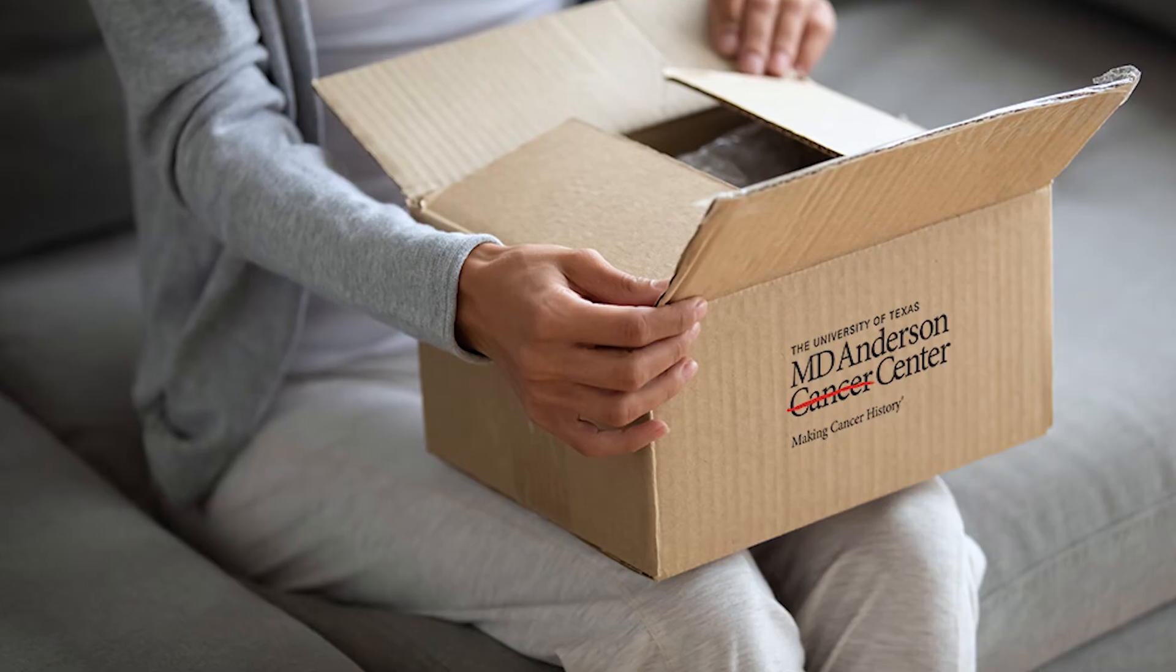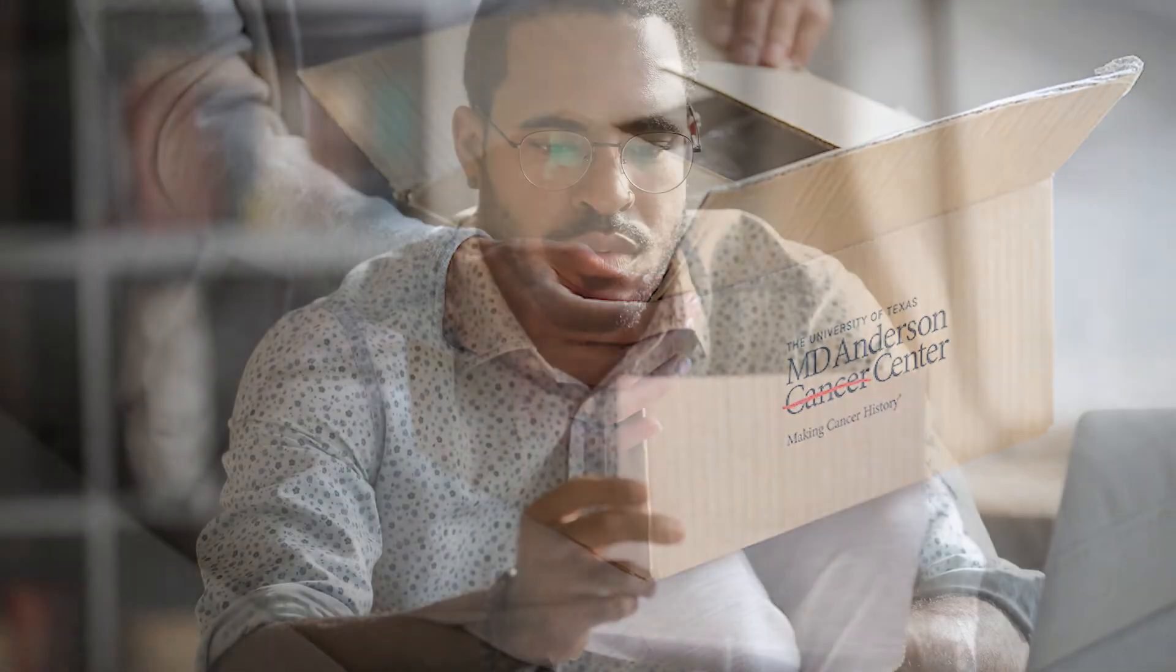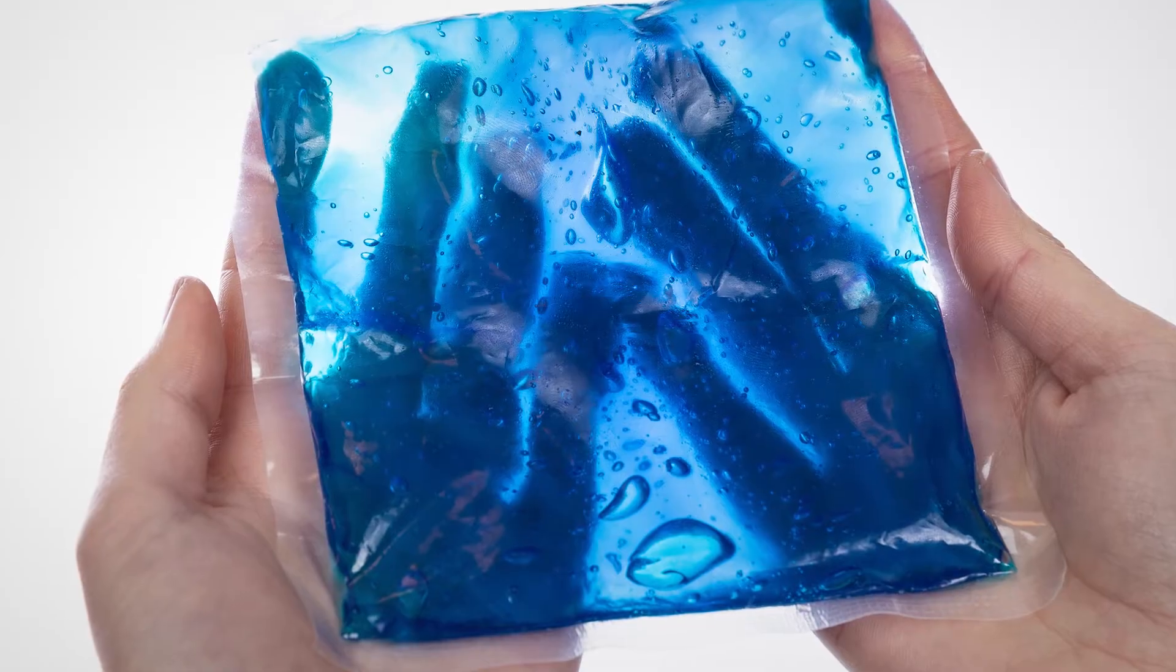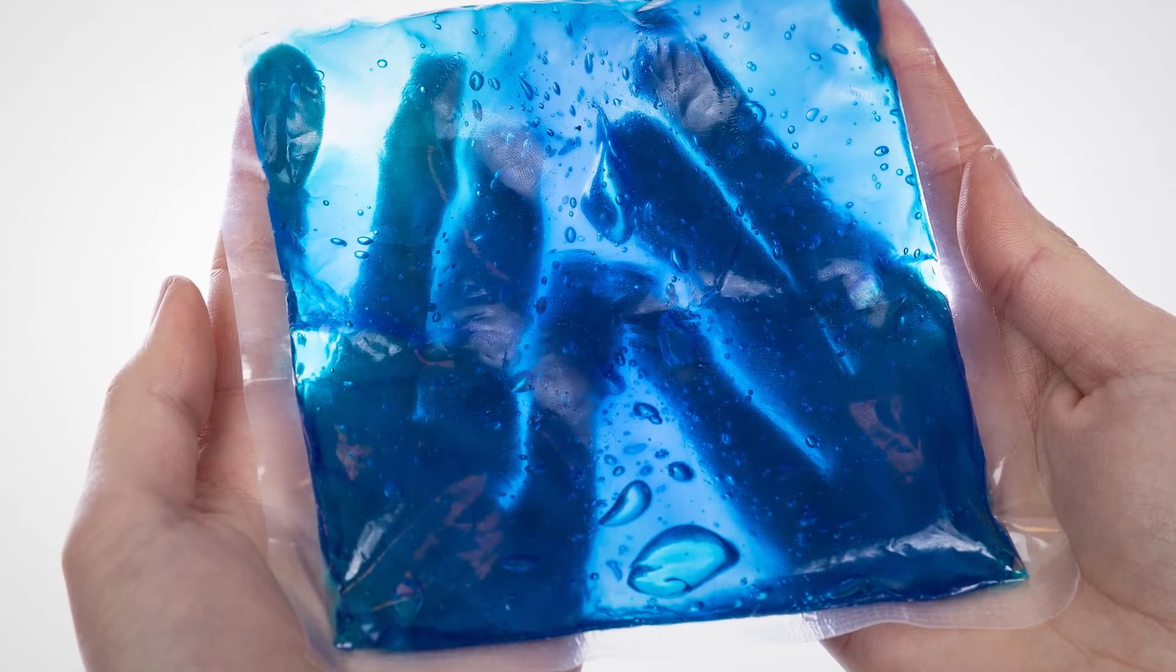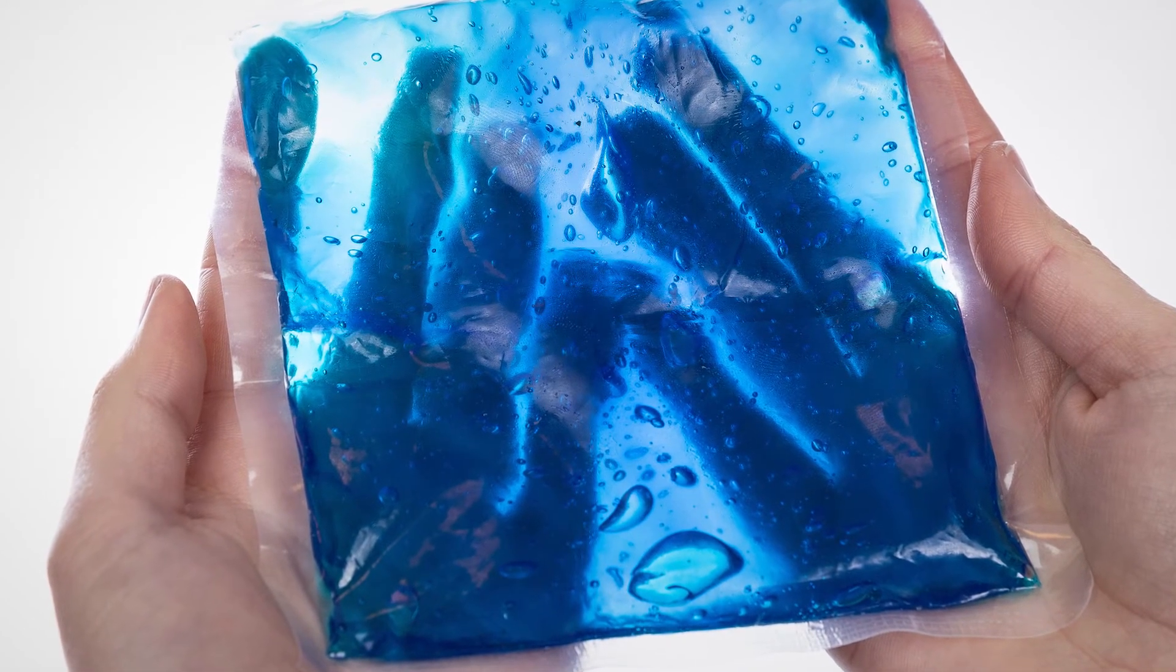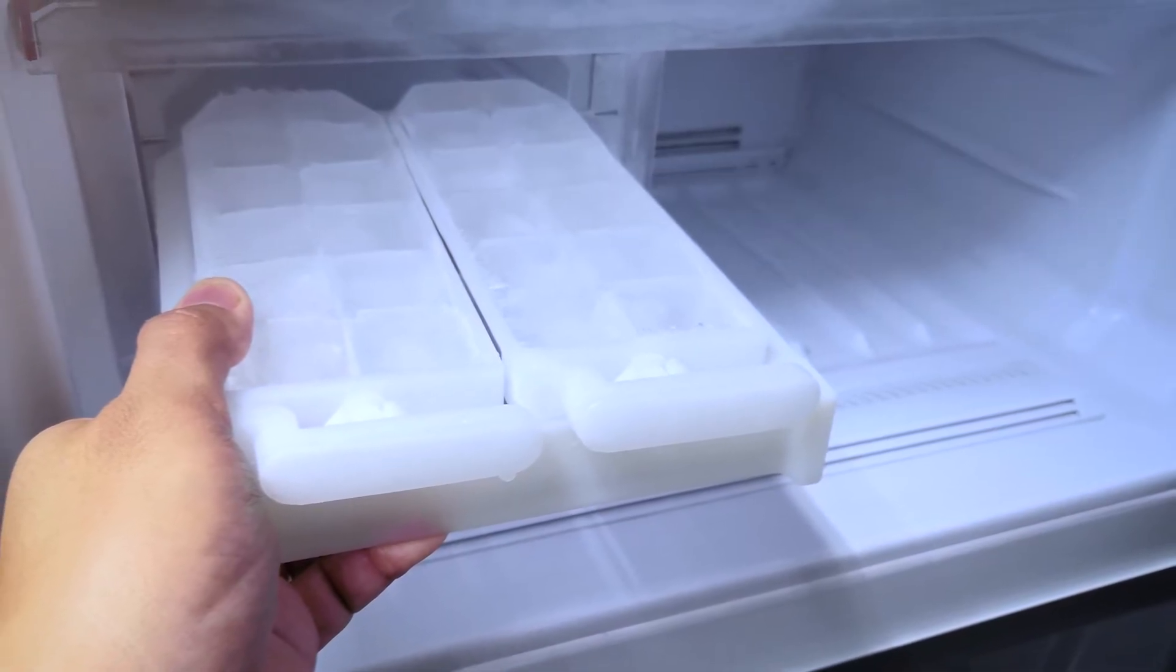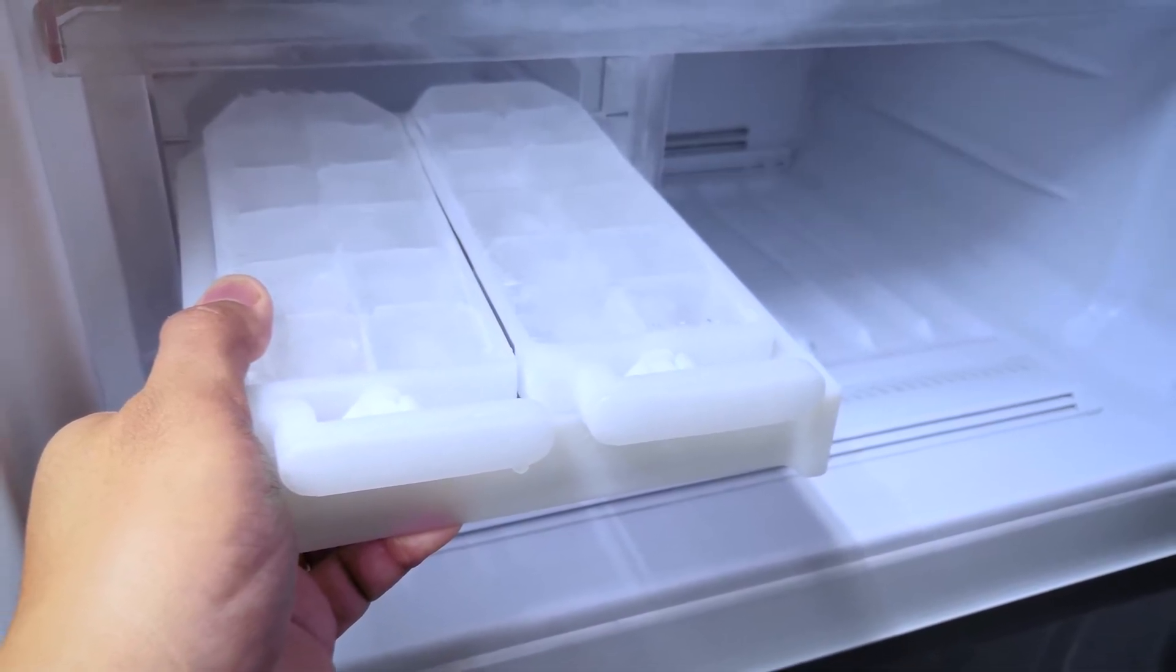Let's review the correct way to collect your stool sample. First, read and carefully follow the instructions included in your collection kit. Stool collection kits vary between studies. If your kit includes gel ice packs, place them in your freezer and let them freeze completely. It is critical that your sample stays cold during its return shipment to us, otherwise we will not be able to use it.